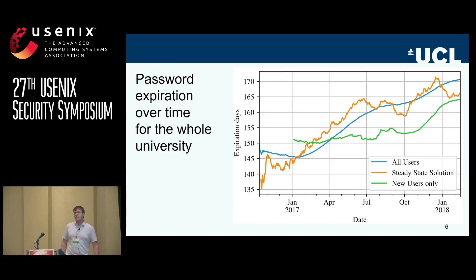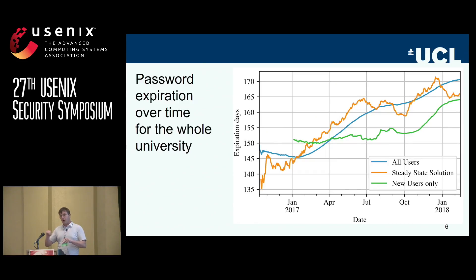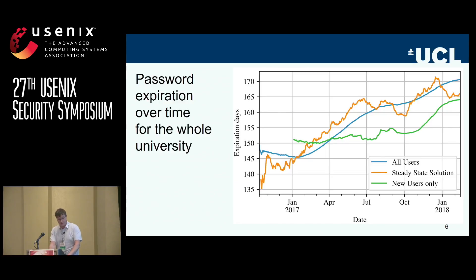I also drew an orange line, which is the steady-state solution — an attempt to predict the final password lifetime of the policy. For each timeframe, we look at the changing behaviors of all users and extrapolate what this would mean if users continue to change their password in this manner. For example, in April 2017, the steady-state solution is at 155 days, so we would expect the blue line to level off there. However, it is actually constantly increasing, so we can't say the policy has had its full effect yet — even after 16 months of data collection, it is still evolving.